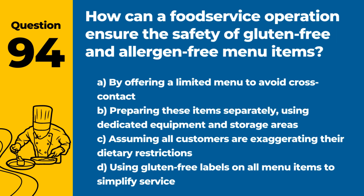Question 94. How can a food service operation ensure the safety of gluten-free and allergen-free menu items? Answer: B. Preparing these items separately, using dedicated equipment and storage areas. This approach minimizes the risk of cross-contact and ensures the safety of customers with dietary restrictions.